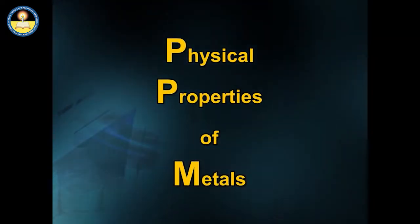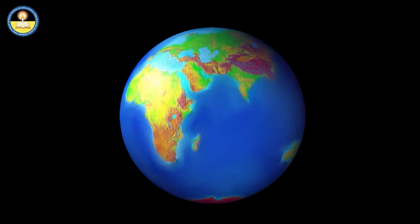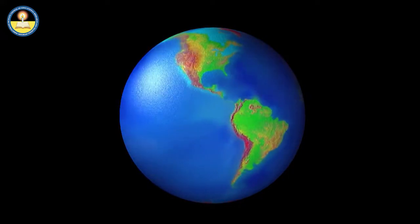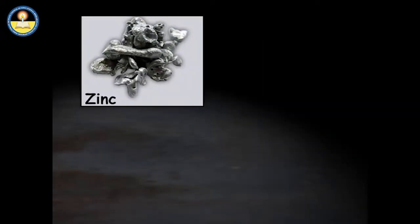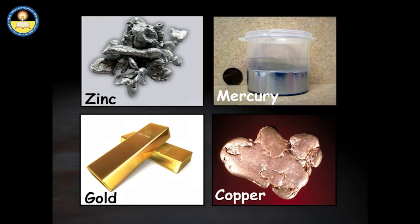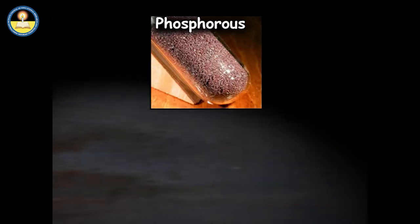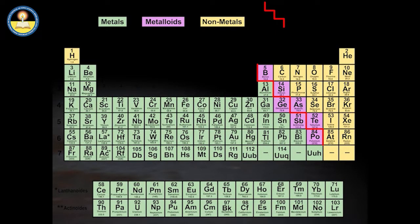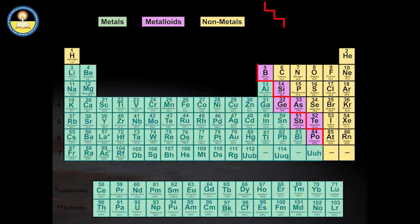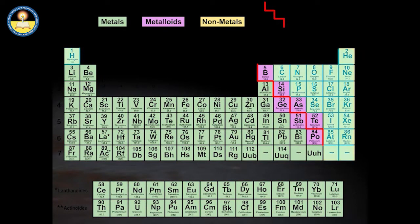Physical Properties of Metals. Our Earth consists of several metals and non-metals. They may occur naturally as elements in the Earth's crust. For example, zinc, mercury, gold, and copper are a few examples of metals. Phosphorus, graphite, and sulphur exist as non-metals. 118 elements are known so far, listed in the periodic table as metals, non-metals, and metalloids. Metals are placed on the left-hand side, non-metals on the right-hand side, and metalloids occupy the intermediate position between metals and non-metals.